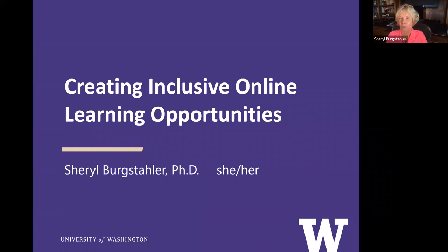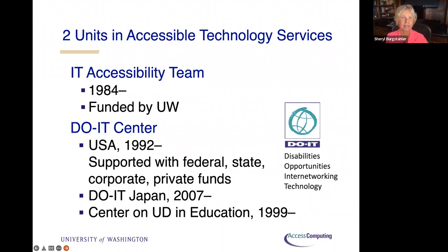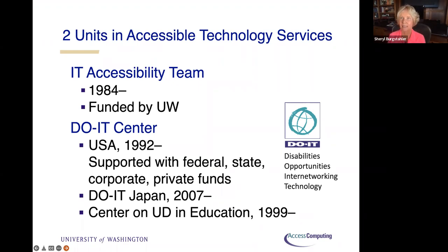I go with she and her. I'm Cheryl Berkstahler here in UWIT, Director of the Accessible Technology Services Group. The Access Technology Services has two units. The IT Accessibility Team, which started in 1984, is fully funded by the University of Washington, and here we have a group of IT accessibility specialists that focus on making sure that the university procures, develops, and uses accessible technology.